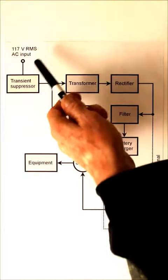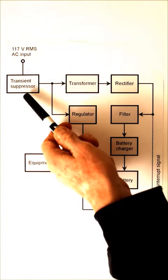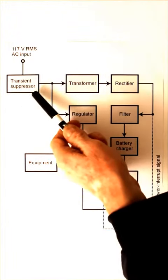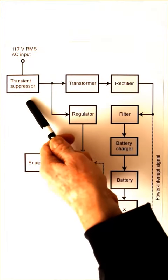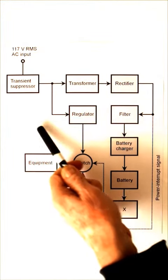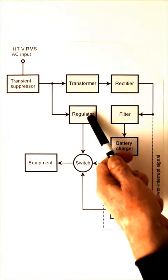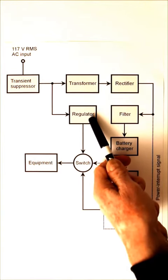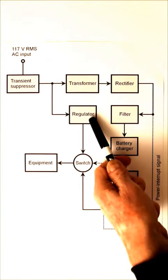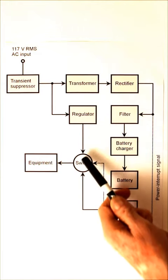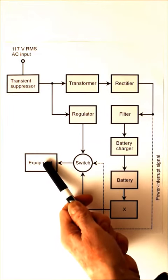What will happen when the power is operating normally is that this will provide a transient suppressor, it'll regulate the voltage to even out any dips or brief surges, and it'll go straight to the equipment.